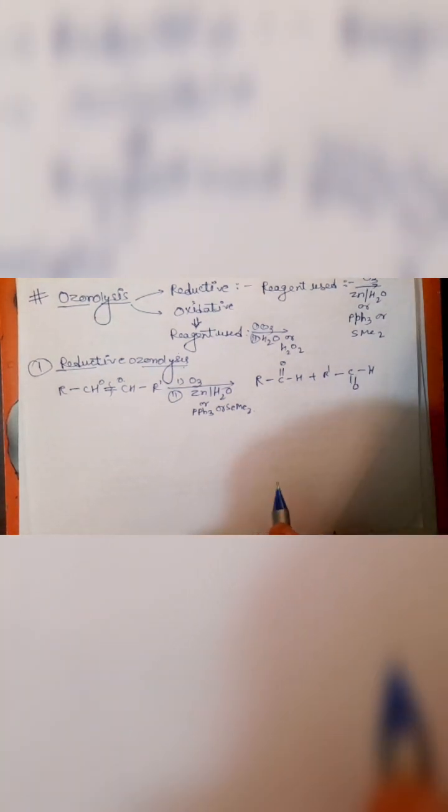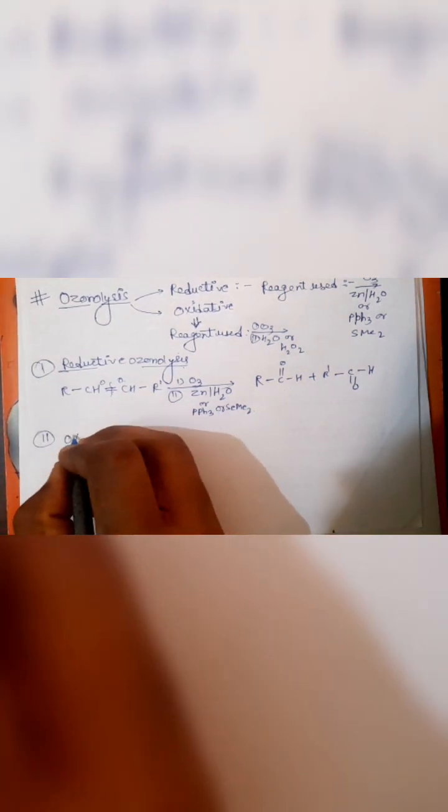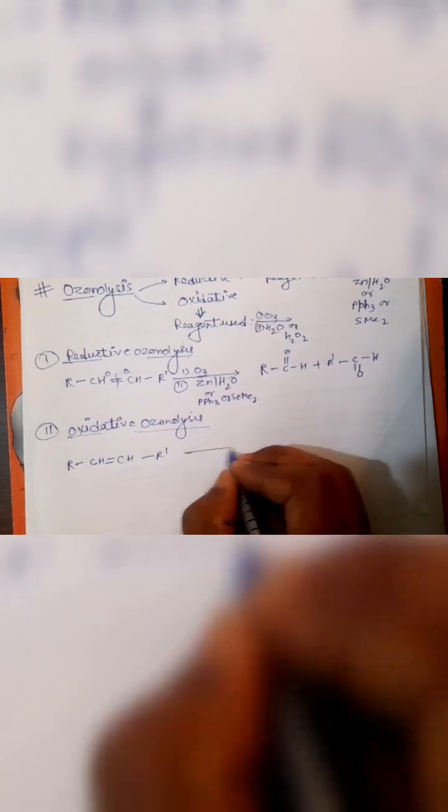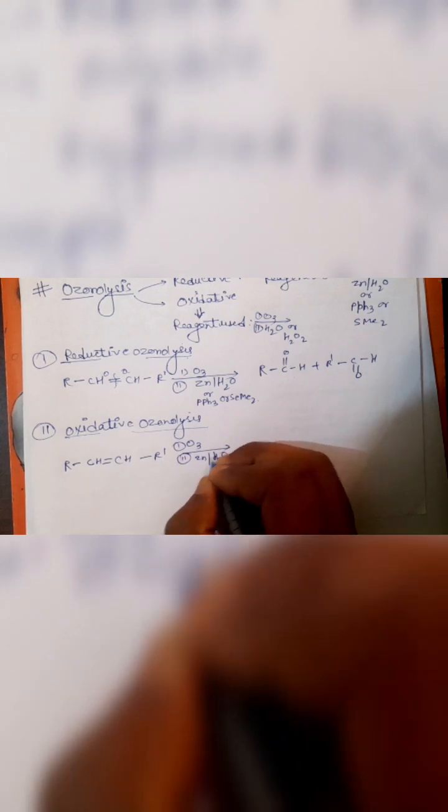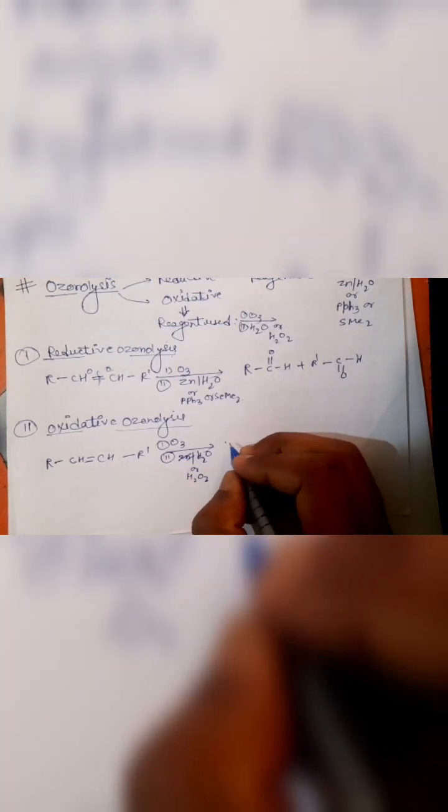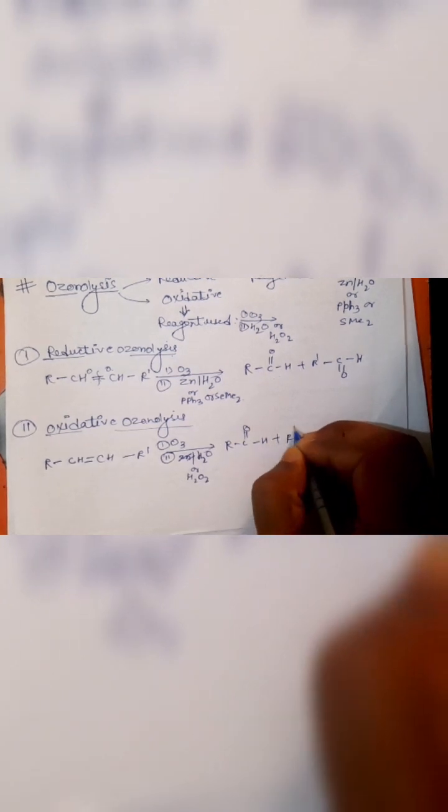Aldehydes are formed in reductive ozonolysis. Now let's discuss oxidative ozonolysis. In oxidative ozonolysis, firstly you perform the reductive ozonolysis, and after the oxidation of that reductive ozonolysis, you get the result of oxidative ozonolysis. With H2O2, it will first give R-C double bond O-H plus R'-C double bond O-H, and after oxidation of both, we get the result of oxidative ozonolysis.